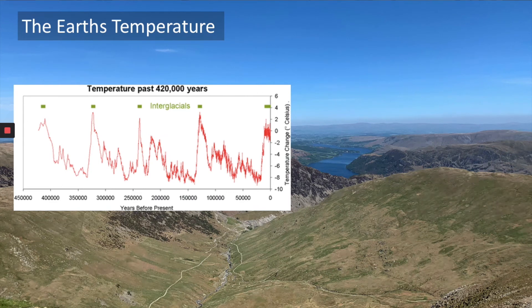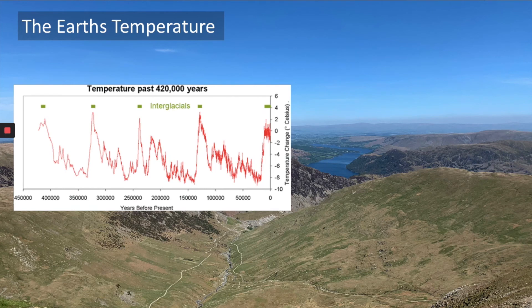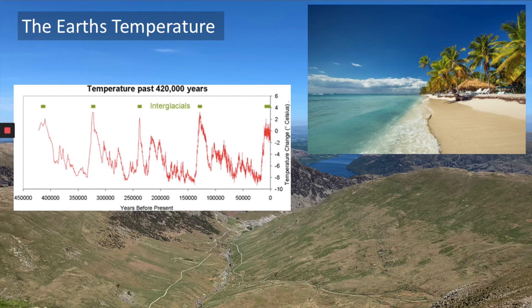At this moment in time, we're in an interglacial, so we've got nice warm weather and there's not a lot of glaciers around. But every 100,000 years or so, you would have much cooler temperatures and we'd have our ice ages. But what exactly is causing this to happen? It's not going to happen on its own — something has to change for temperatures to decrease.